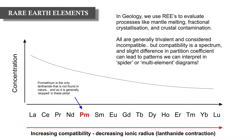All elements from lanthanum to lutetium are shown, but promethium is included here as a note — it is the only lanthanide not generally found in nature, so don't be alarmed when it's missing from spider diagrams in any literature that you read.